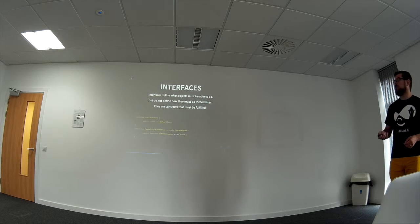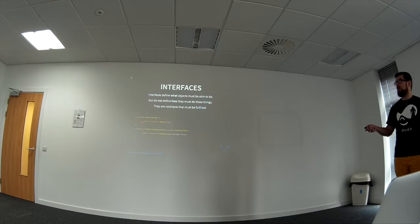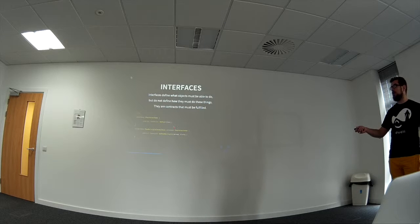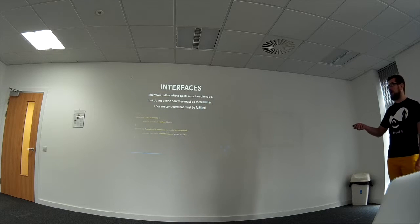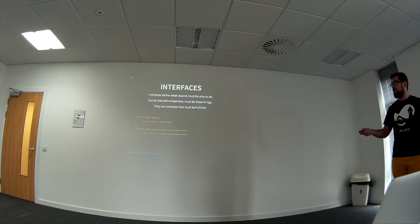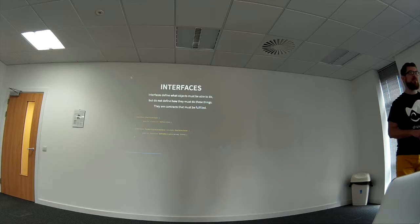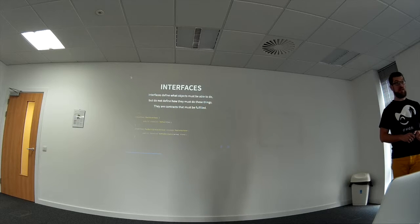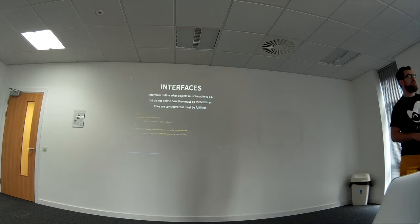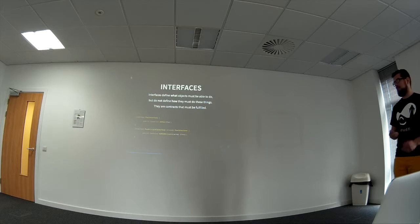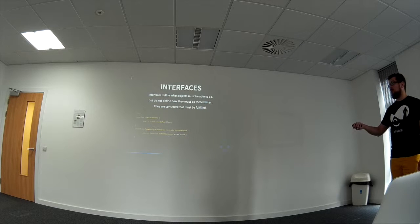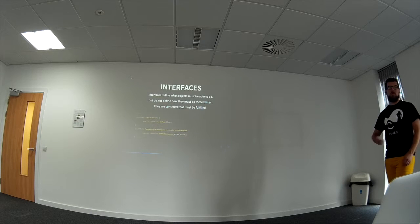You use the interface keyword to specify your interface, and you create a function with a name and parameters just like you would in regular code. However, you'll see a semicolon here instead of curly brackets — there's no body. It's illegal to have a function body in an interface. Interfaces can extend interfaces, and classes can extend classes — like the house class can extend the building class.